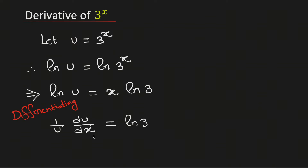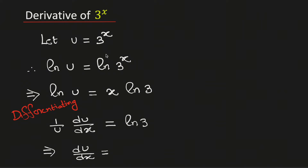From this equation, the value of du/dx will be equal to u times ln 3. And the value of u is 3 to the x. Therefore, this will be equal to 3 to the power x times ln 3.